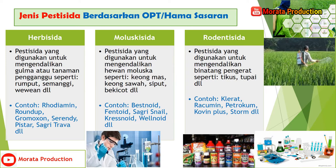Yang ketiga yaitu rodentisida, yaitu pestisida yang digunakan untuk mengendalikan binatang pengerat seperti tikus, tupai, dan lain-lain. Contoh produknya adalah Klerat, Racumin, Petrokum, Cofin Plus, Strom, dan lain-lain. Sebenarnya banyak contoh jenis-jenis produknya yang beredar baik di kios ataupun yang dijual di pasaran, namun di sini hanya mencontohkan saja agar lebih paham.